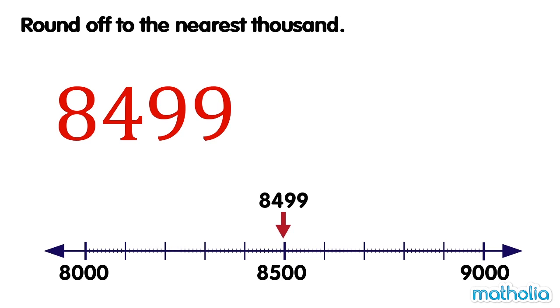Round off to the nearest thousand. Let's round off 8,499 to the nearest thousand.